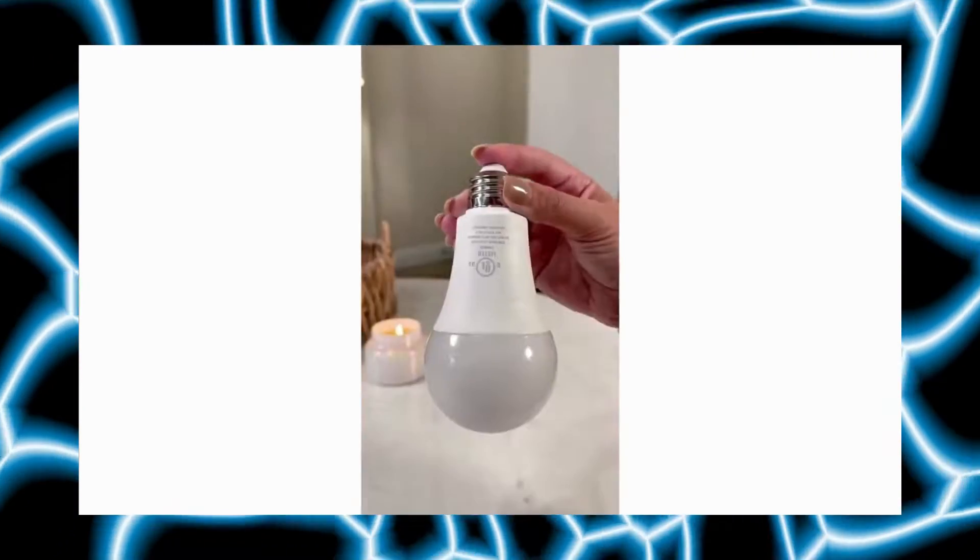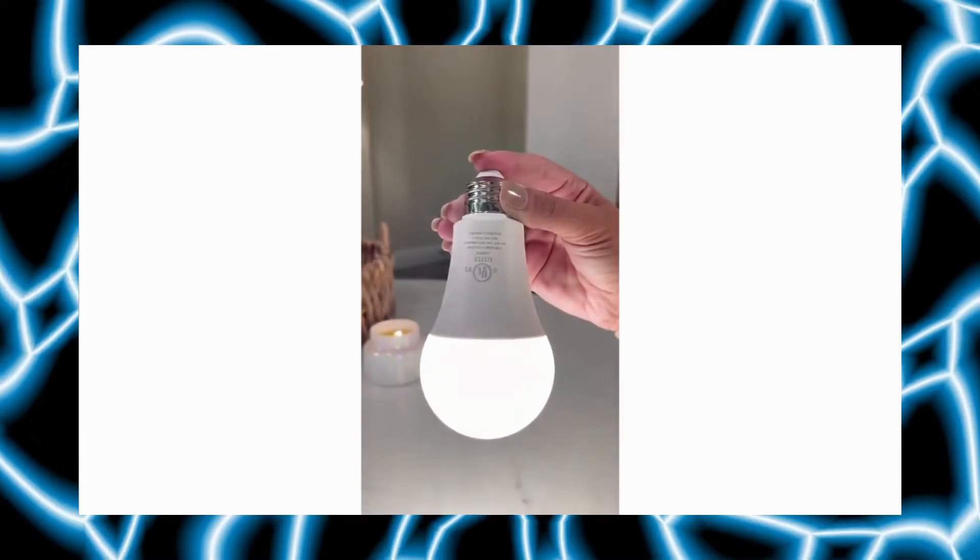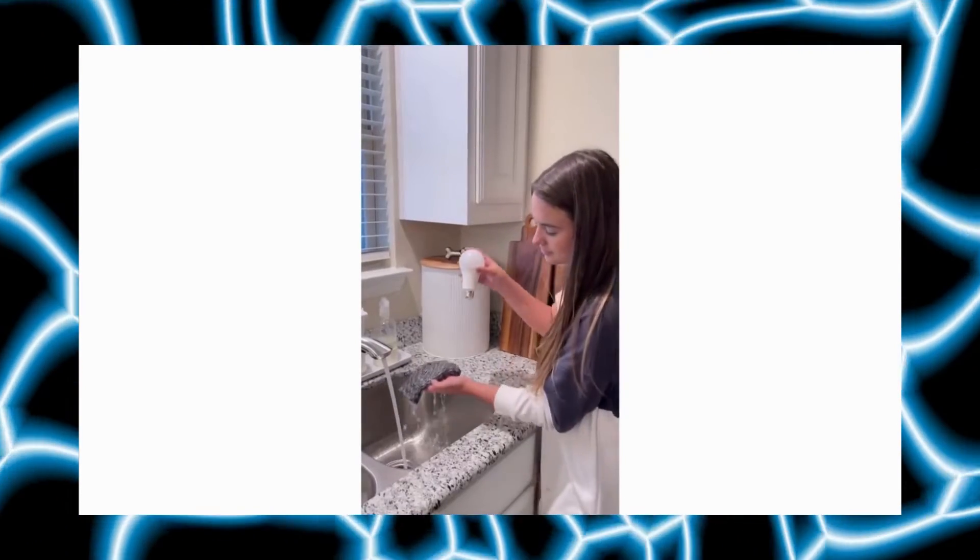I'm about to blow your mind. Amazon home gadgets you didn't know you needed. Okay, I know this sounds crazy, but this is a portable emergency light bulb that can not only light up by the touch of your finger, it can also light up with a wet cloth.